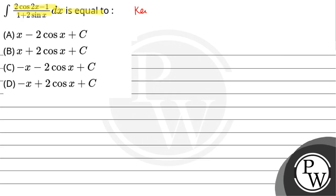So bachow, here our key concept is: we will use the identity that cos2x is equal to 1 minus 2sin²x.